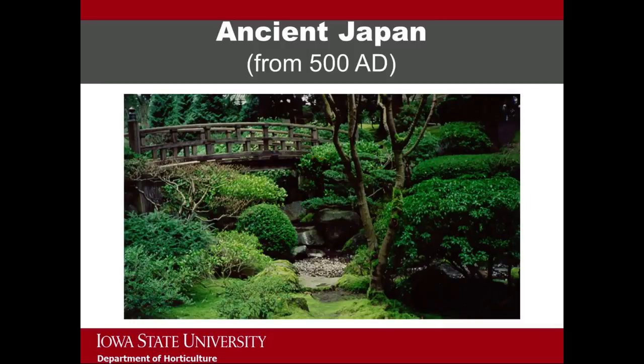The image on this slide shows an overall view of an area within the Portland Japanese garden. It highlights the tonal contrasts created by the various shades of green, shrubs that have been sheared and shaped, rocks and pebbles, a bridge, and moss being grown as the ground cover providing yet another shade of green.